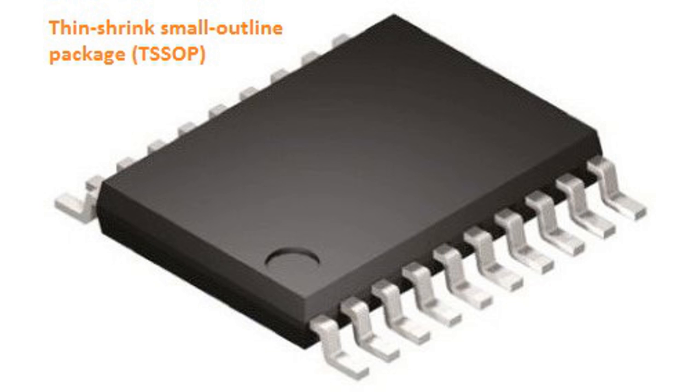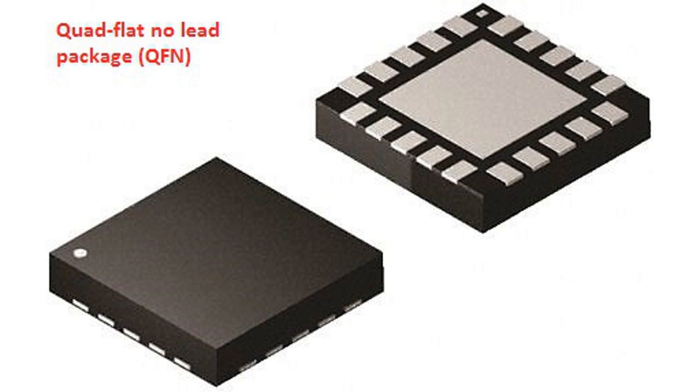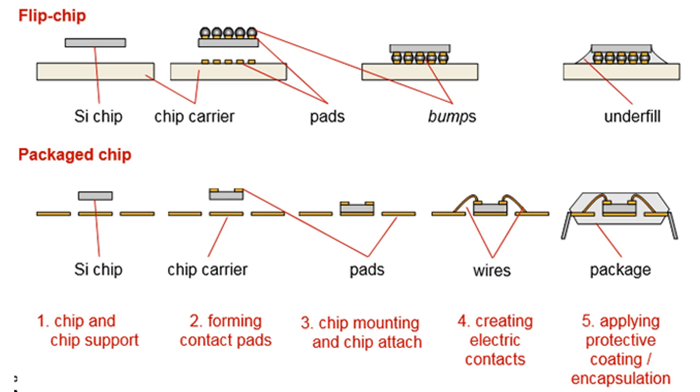There are three common package types used in power electronics today: Thin shrink small outline package TSSOP, Quad flat no lead package QFN, and Flip chip on lead package FCOL.